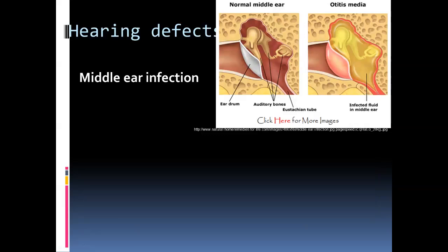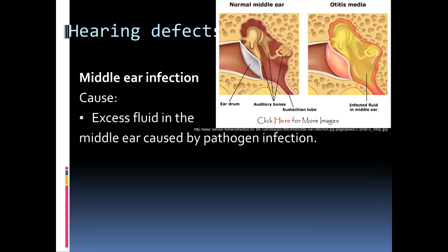We move on to some defects with the ear. Firstly, a middle ear infection. These are caused by pathogens such as bacteria. The middle ear is connected to the back of the throat via the eustachian tube. When a person has this infection, there is inflammation of the tissue and a buildup of fluid and mucus within the middle ear, which pushes against the tympanic membrane and can cause a lot of pain. The cause being bacteria, taking antibiotics can assist in killing the pathogen and resolving the issue.